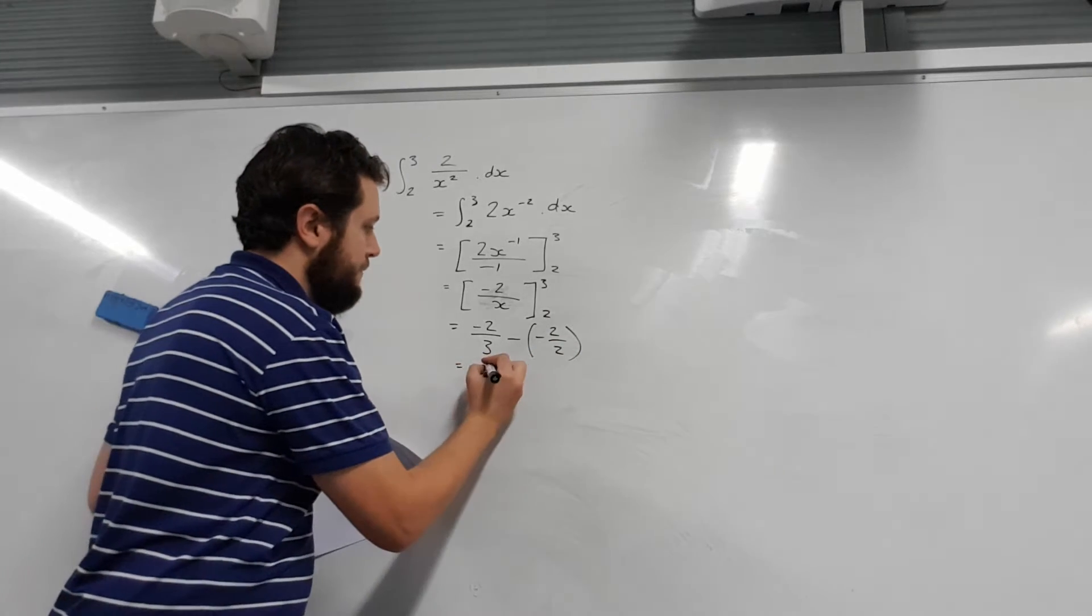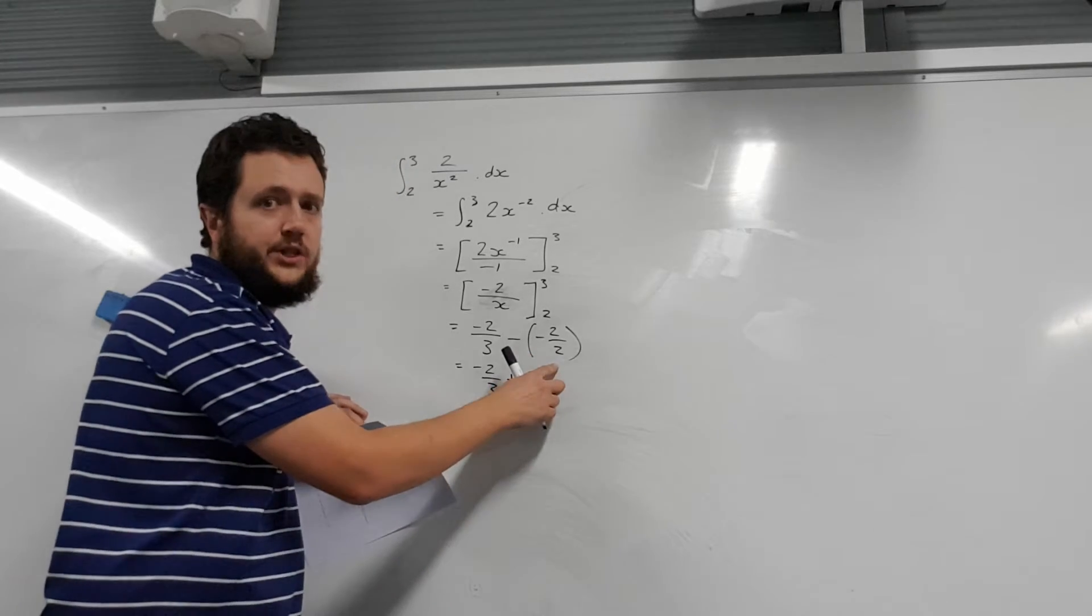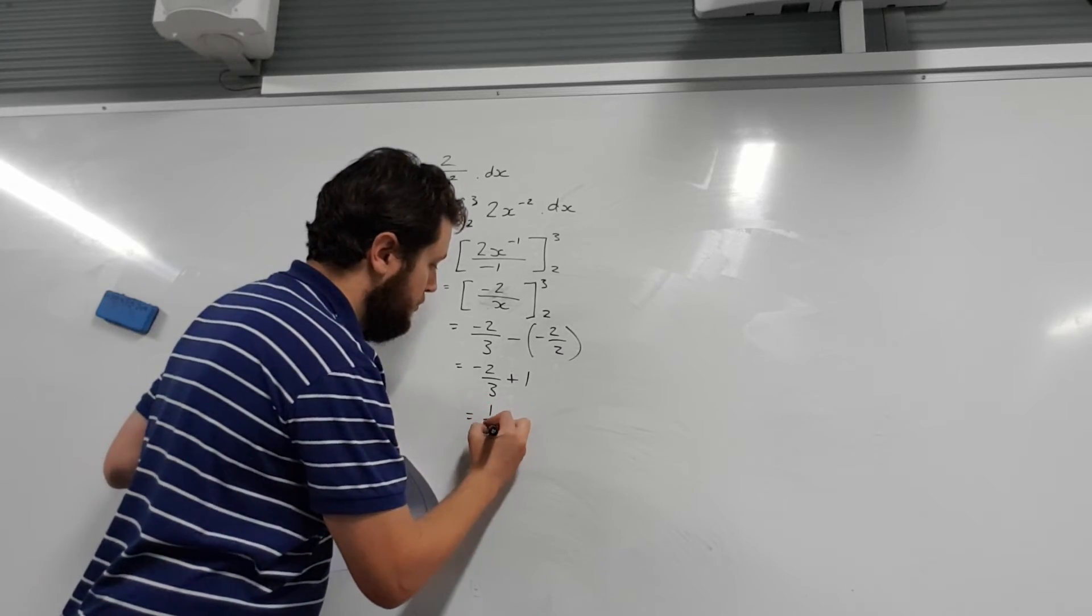So that's negative 2 thirds plus 1. 2 on 2 is just 1. Double negative. Plus 1. That should give me 1 third.